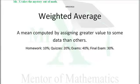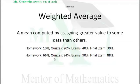Now this line represents your grades. You earned a 66% on your homework. You earned a 94% on your quizzes. You earned a 90% on your exams. And you got an 88% on your final exam.